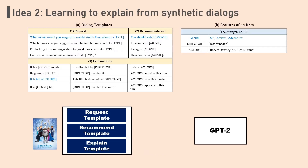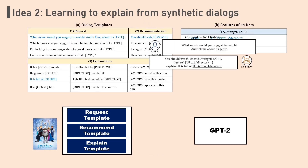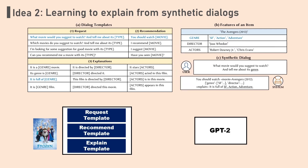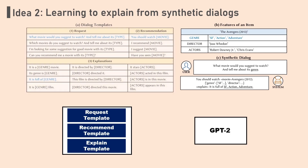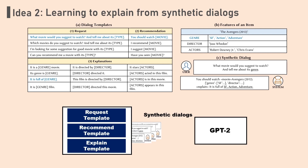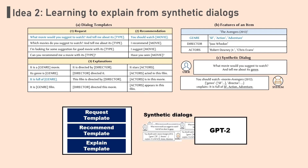To address the second challenge, we propose the creation of synthetic dialogues, from which our conversational module can learn. These synthetic dialogues select and explain the relevant features of the recommended item, considering the dialogue context. We can create these synthetic dialogues using dialogue templates and item features. Through these, our GPT-based conversation module can learn to explain recommended items with their features in a contextually relevant manner.